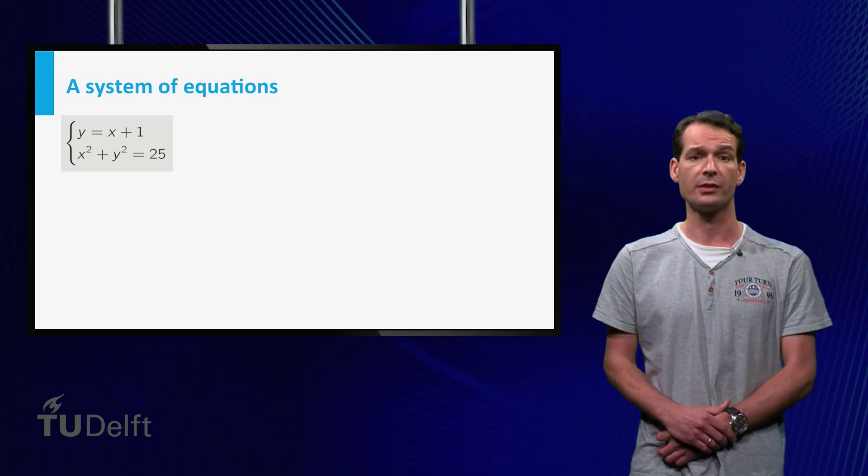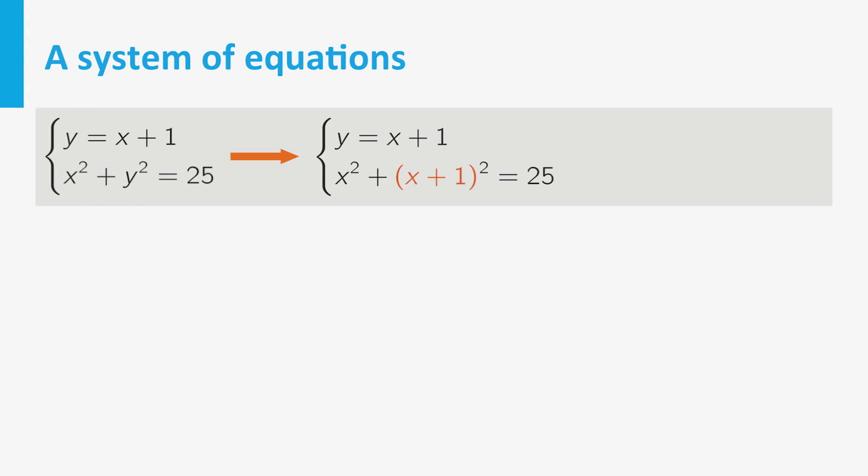To solve this system of equations, we substitute the first equation into the second one. So, we replace y in the second equation by x plus 1. This gives us an equation in which we only have one variable, x squared plus x plus 1 squared is equal to 25.